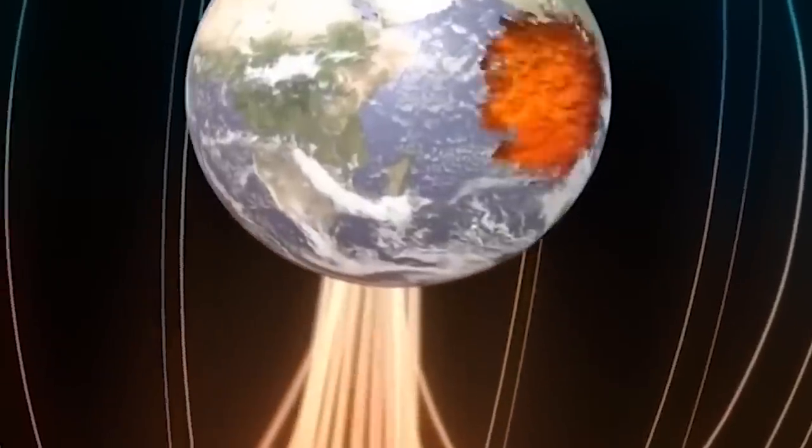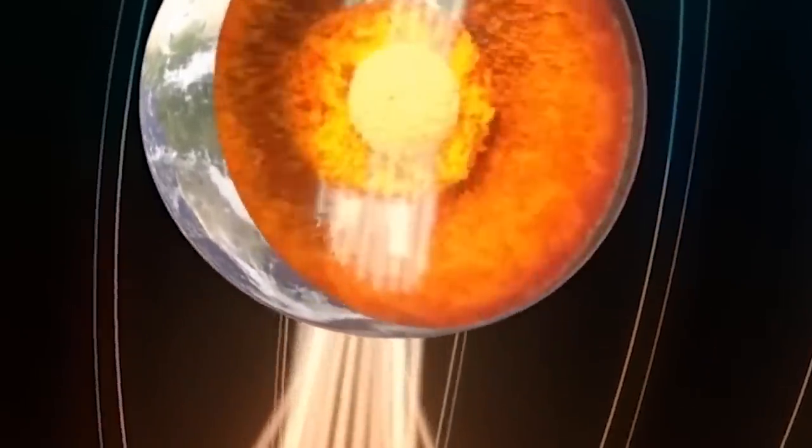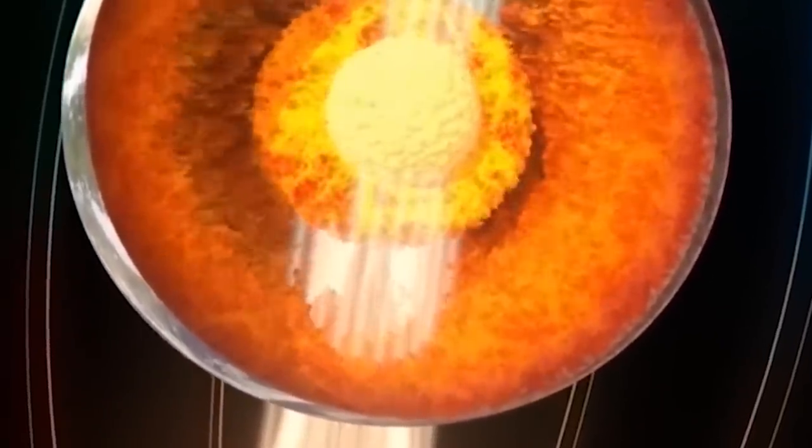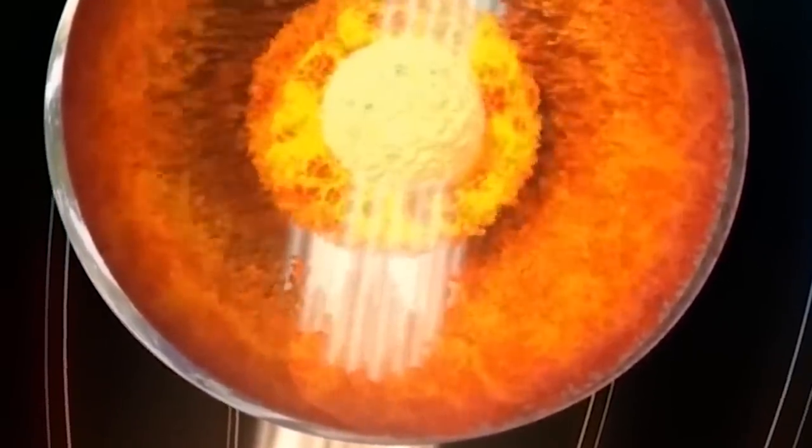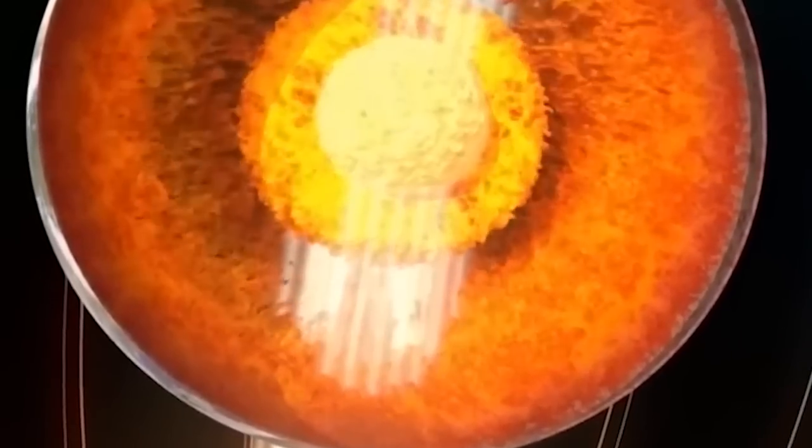However, it's important to note that the outer core's rotation speeds up as you move toward its center. Thus, the initial magnetic field becomes wound into circular rings around the axis of rotation, forming a torus shape.